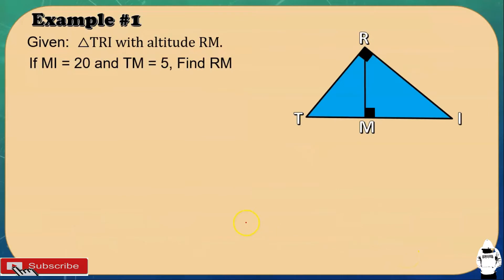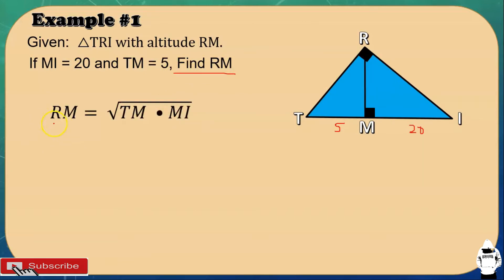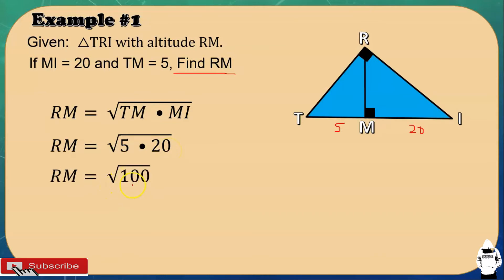Let's have an example. Given triangle TRI with altitude RM. If MI is 20 and TM is 5, find RM. So ang kinukuha natin yung altitude. Using the formula, RM = √(TM × MI). By substitution, RM = √(5 × 20) = √100 = 10. So the altitude RM is 10 units.